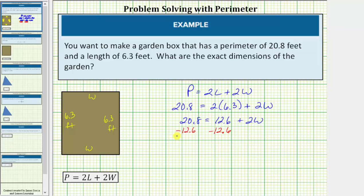And now we simplify. 20.8 minus 12.6 is equal to 8.2. We have 8.2 equals, this difference is zero. So 8.2 is equal to 2w.